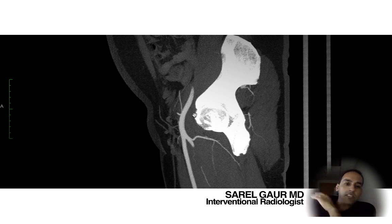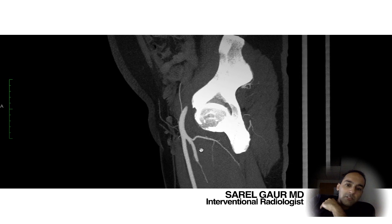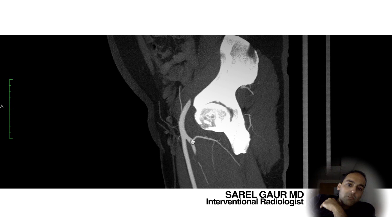Rather than just being a single slice, a MIP shows vessels as they course through the body. For example, I see this long slender vessel here — this is the SFA. As you follow it cephalad, it combines with the DFA, the profunda femoris, which is posteriorly here. As they come together, they form the common femoral artery at the level of the femoral head.